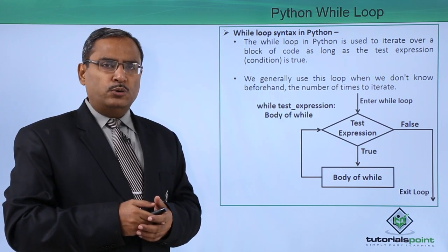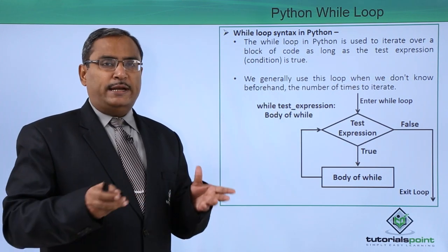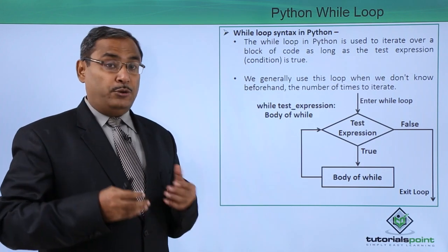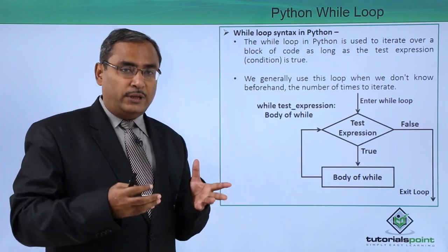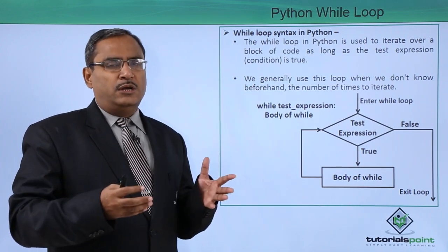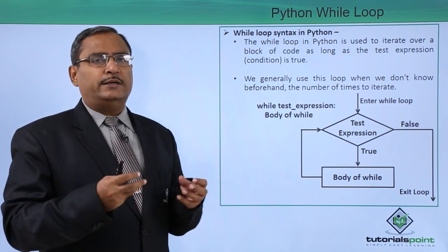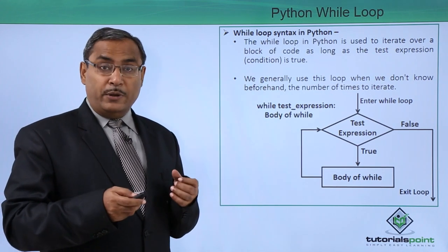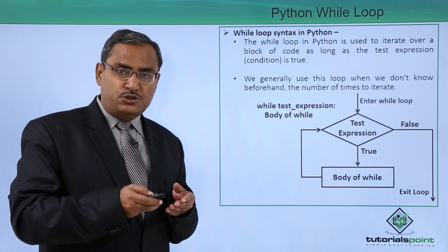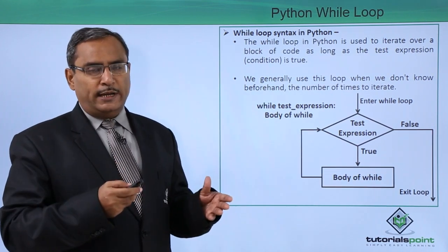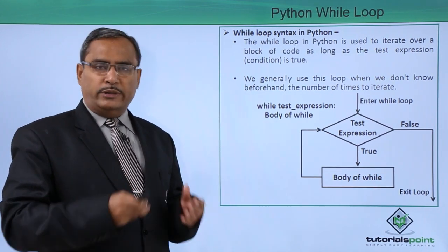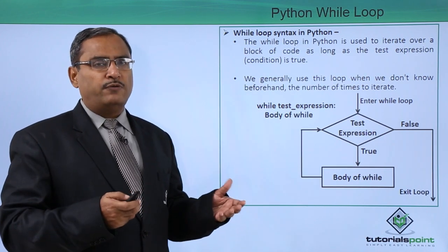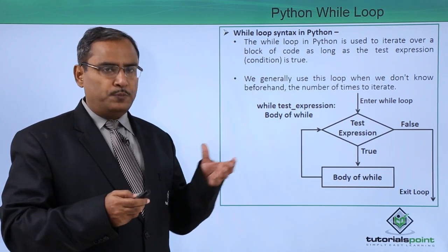Whenever we know how many times we are going to iterate, we use the for loop. But if we do not know how many times we are going to iterate, then we use the while loop. Because when the condition is true the loop will get executed, and when the condition is false it will come out from the loop construct.